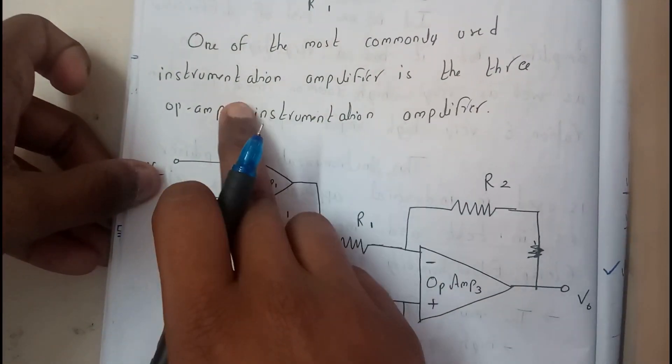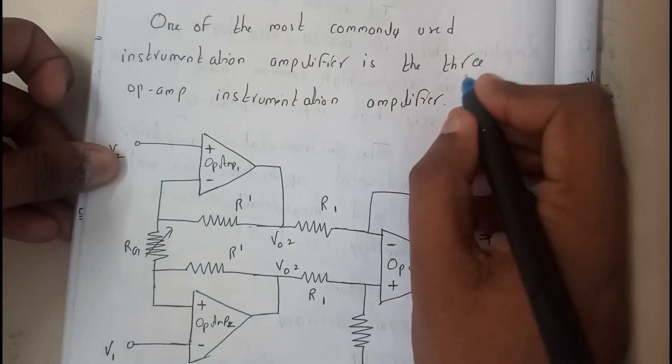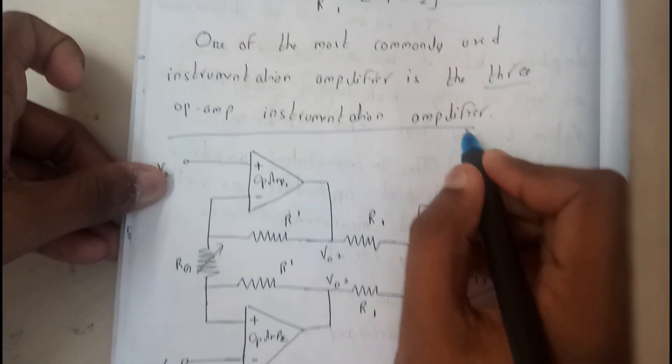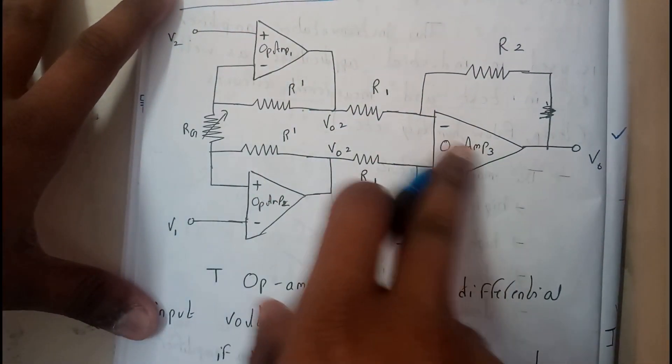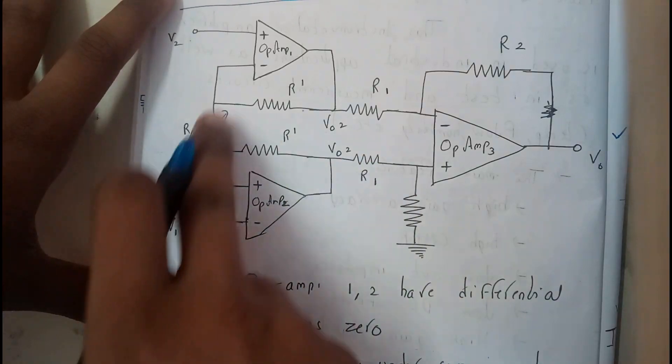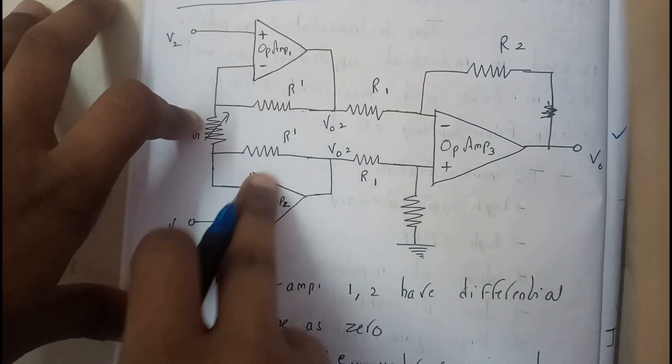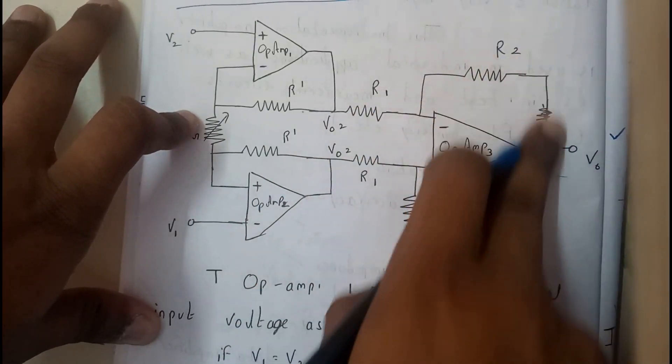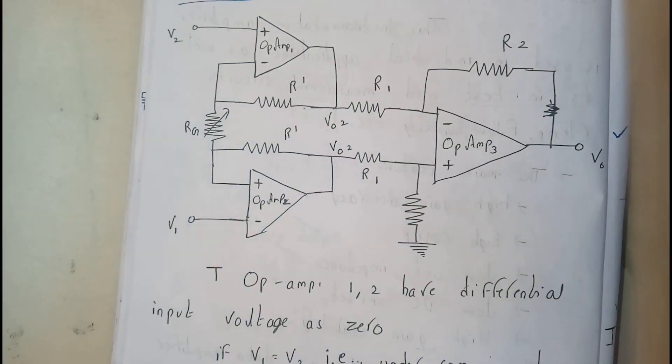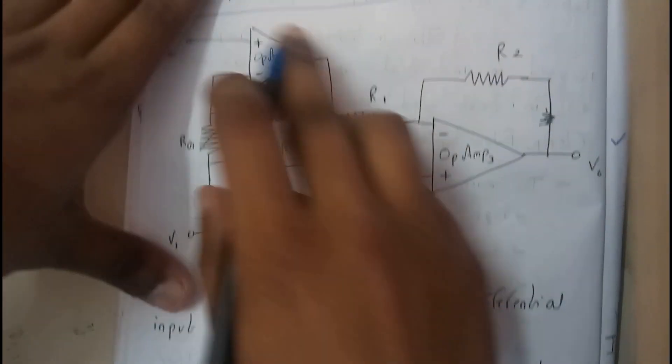It has three operational amplifiers. These two have a common resistance. From this we'll be having two outputs which will be given as input to the third op-amp. We'll be initially drawing three op-amps.